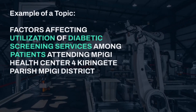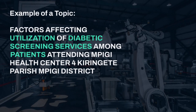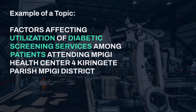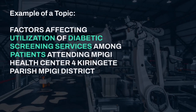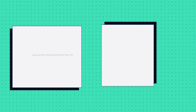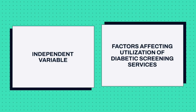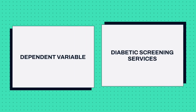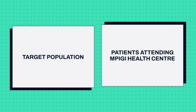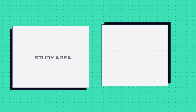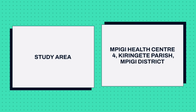Our sample topic is: 'Factors affecting utilization of diabetic screening services among patients attending PG Health Center, Chillingent Parish, PG District.' The independent variable is factors affecting utilization of diabetic screening services. The dependent variable is diabetic screening services. The target population is patients attending PG Health Center, and the study area is PG Health Center, Chillingent Parish, PG District.